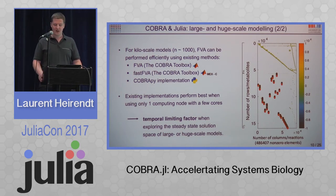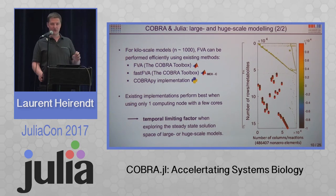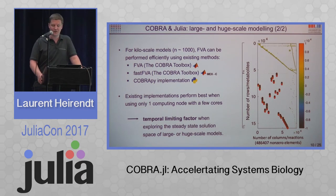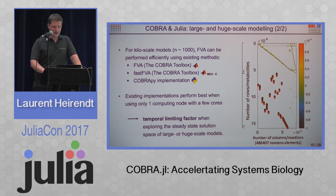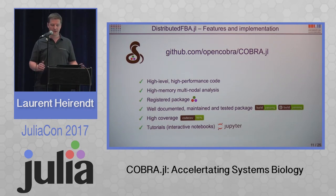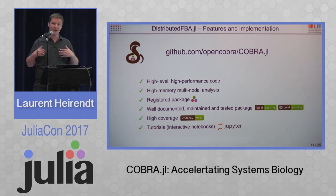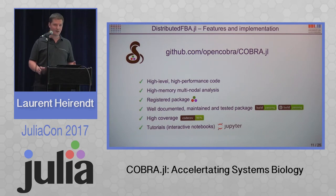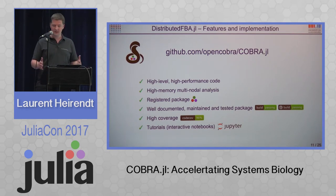What you can see is the stoichiometric matrix S itself, and then plenty of coupling constraints. The coupling is what really causes numerical difficulties because they are on very different orders of magnitude — in this plot, the order of magnitude is proportional to the size of the dot in the spy plot. COBRA.jl is a high-level package where we're really trying to give high-performance methods to the community who aims at developing these very large-scale models. COBRA.jl is a multinodal analysis package — you can use multiple computing nodes as well as multi-threads. It's really tailored for parallelism.